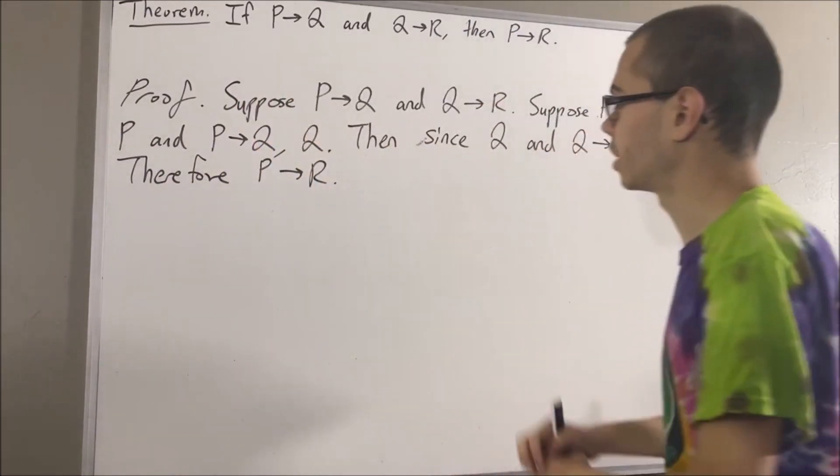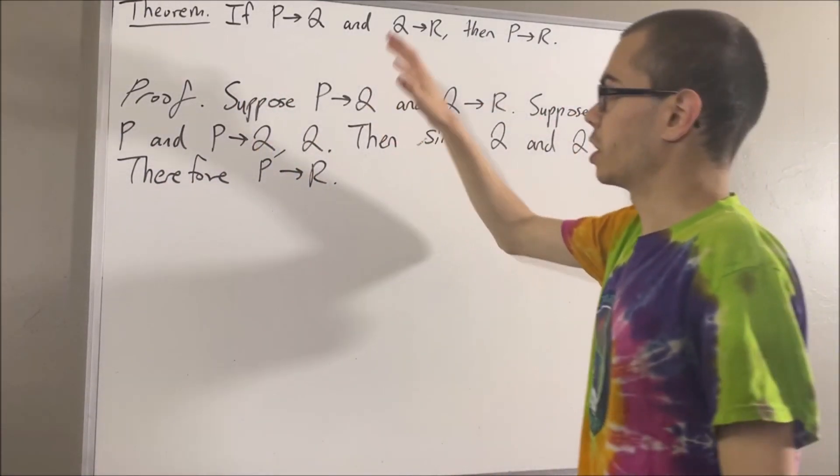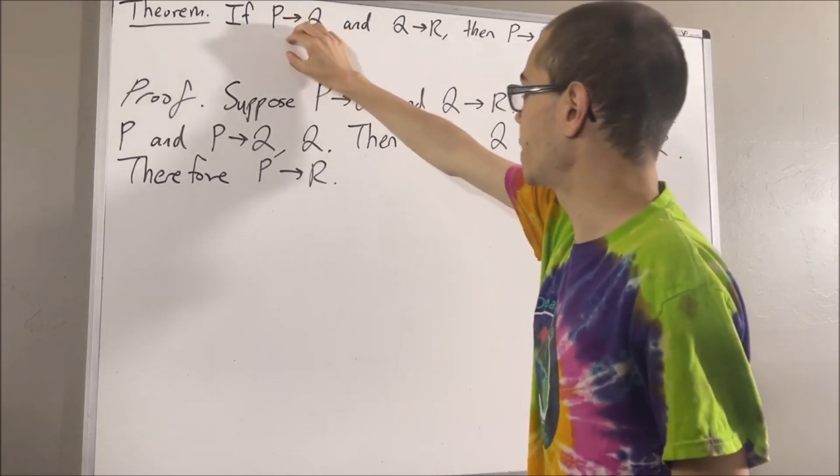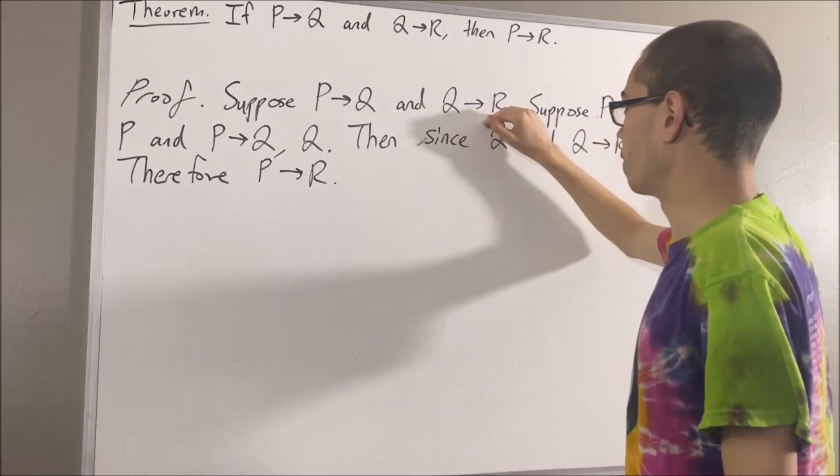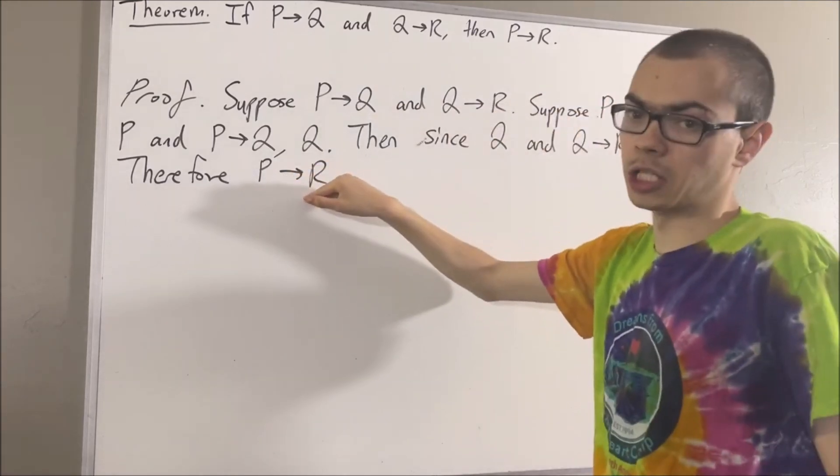And so now, putting this all together, we worked under the assumption that both this and this were true. And under the assumption that those two were true, we found out that P implies R is true.